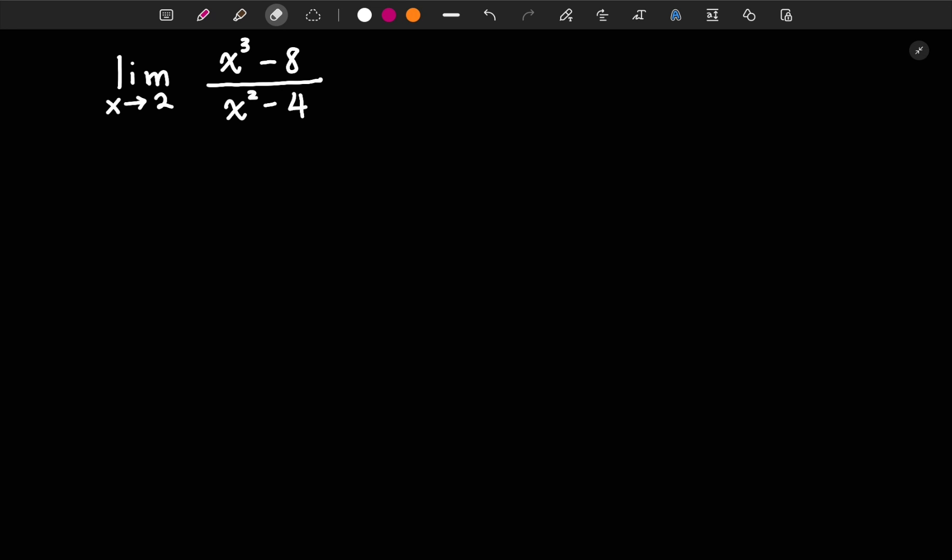In this video, let's look at how to solve this limit problem. First, we plug in x equal to 2 to the original function, and we would get 0 over 0.